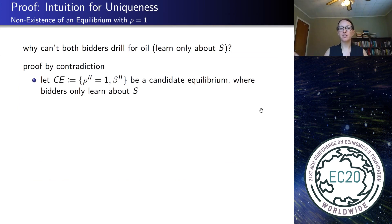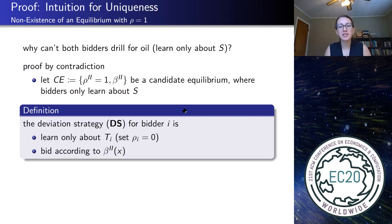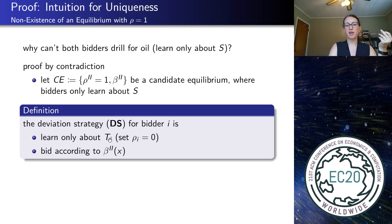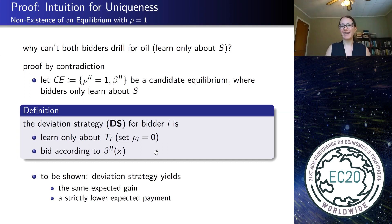Why can't it be that both bidders want to figure out how much oil there is and learn only about the common component? Let's prove it by contradiction. Assume it would be an equilibrium in which both bidders drill for oil. Then the following deviation strategy does the job: instead of learning about s, the common component, let the bidder deviate and learn only about his private component ti — but for tractability, use the same bidding function as before. This deviation strategy will have the same expected gain, keeping the winner's curse exactly as it was, but it yields a strictly lower expected payment through the second order statistic argument.